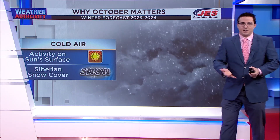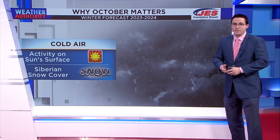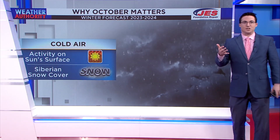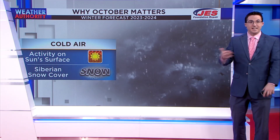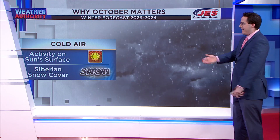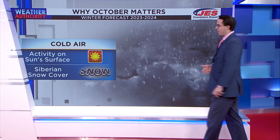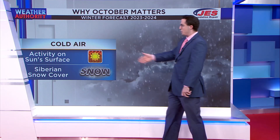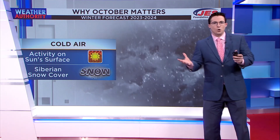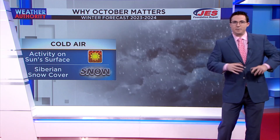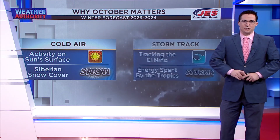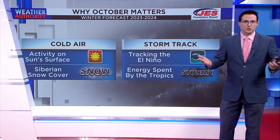When it comes to cold air, there's a theory that the amount of activity on the sun's surface can influence that. There's also another theory that how much snow cover there is in Siberia can influence how much cold air seeps into the eastern U.S.